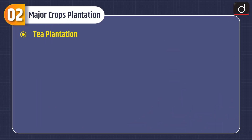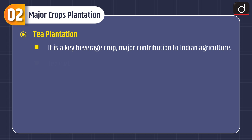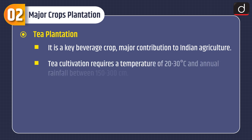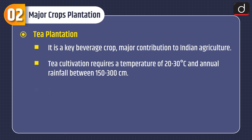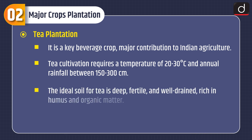Moving on to Major Crops Plantation. First is Tea Plantation — it is a key beverage crop and a major contributor to Indian agriculture. Tea cultivation requires a temperature of 20 to 30 degrees Celsius and annual rainfall between 150 to 300 cm. The ideal soil for tea is deep, fertile and well-drained, rich in humus and organic matter.